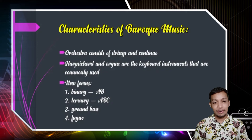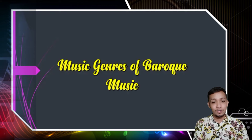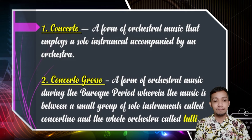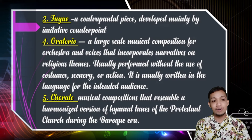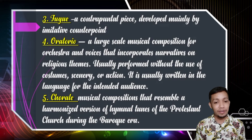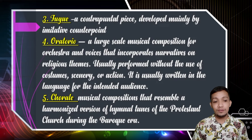These are the music genres of Baroque music. Number one, concerto — a form of orchestral music that employs a solo instrument accompanied by an orchestra. The second one is concerto grosso — a form of orchestral music during the Baroque period wherein the music is between a small group of solo instruments called concertino and the whole orchestra called tutti. Third is the fugue — a contrapuntal piece developed mainly by imitative counterpoint. Fourth is oratorio — a large-scale musical composition for orchestra and voices that incorporates narratives on religious themes, usually performed without the use of costume, scenery, or action, and usually written in the language of the intended audience. The fifth one is chorale — a musical composition that resembles a harmonized version of hymnal tunes of the Protestant church during the Baroque era.